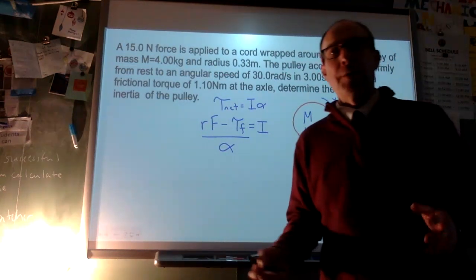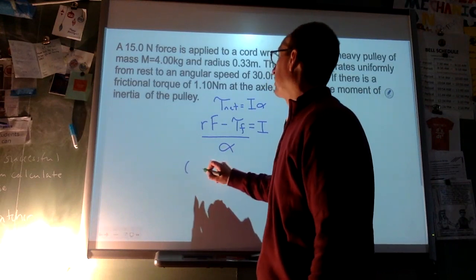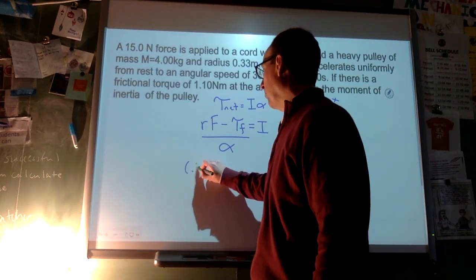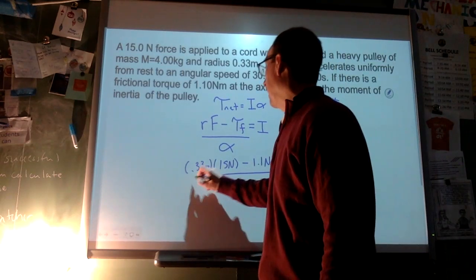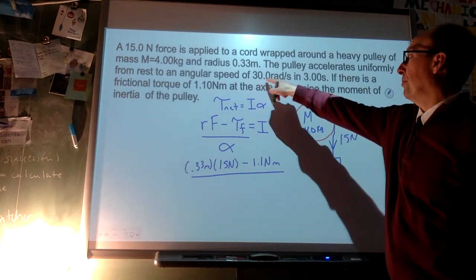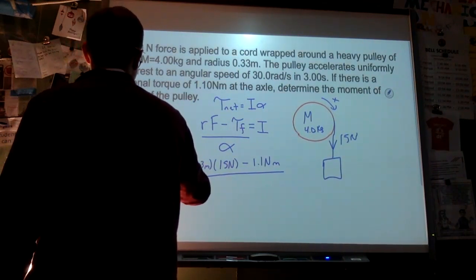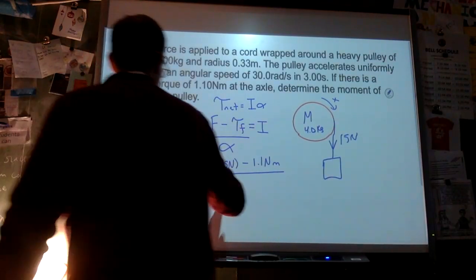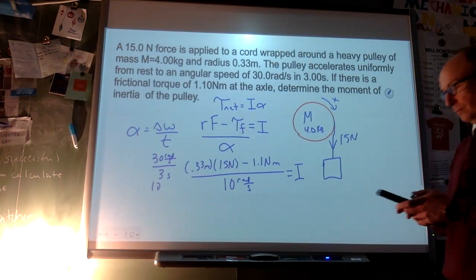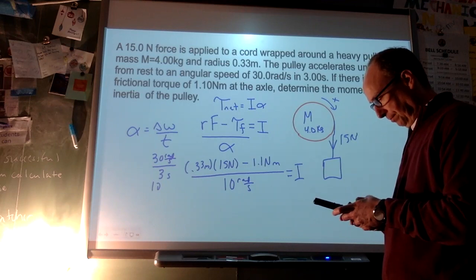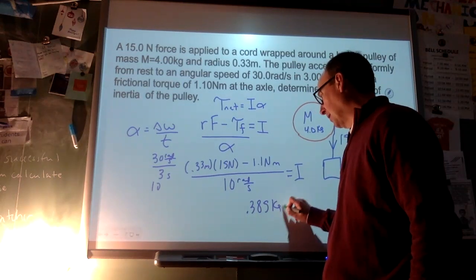The pulley is non-uniform in shape. Plugging in values: r = 0.33 m, F = 15 N, τ_friction = 1.1 N·m, and α = Δω/t = 30/3 = 10 rad/s². Moment of inertia I = (0.33×15 − 1.1) / 10 = 0.385 kg·m². The unit kg·m² accounts for both mass and how far it's located from the axis.